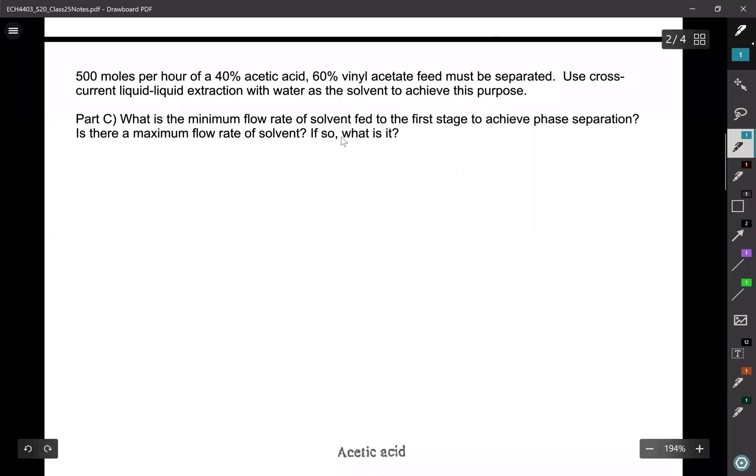500 moles per hour of a 40% acetic acid, 60% vinyl acetate feed must be separated. Use cross-current liquid-liquid extraction with water as the solvent to achieve this purpose.